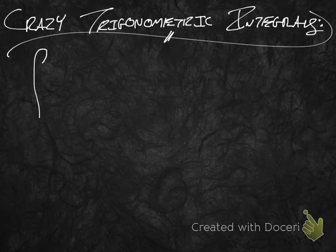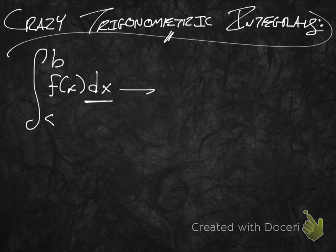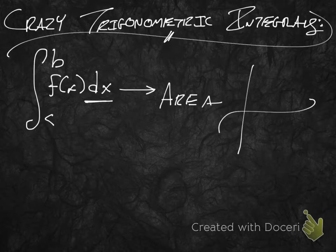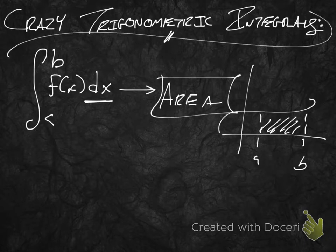We're looking for a definite integral — a quick recap: that is the integral over some interval a to b of some function with respect to a variable of integration. This gives us a measure of area, telling us how much space is under the curve between a and b on the x-axis. That's what we're talking about with definite integrals, and this is going to be a definite trigonometric integral.